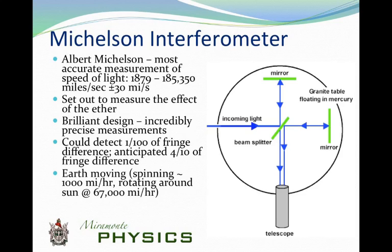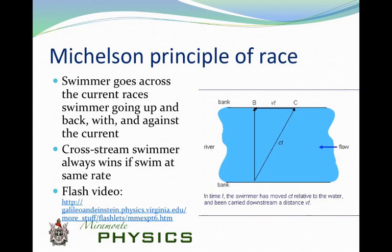Keep in mind that the Earth is moving through this ether — spinning at about 1,000 miles per hour and rotating around the sun at about 67,000 miles per hour, so we're traveling through the ether at very high speed. Michelson used the principle of a race in a current: if a swimmer goes across a current and races a swimmer going upstream and back the same distance, it turns out the cross-stream swimmer always wins. That's the principle behind the interferometer — one beam going with the ether wind, one going across it.